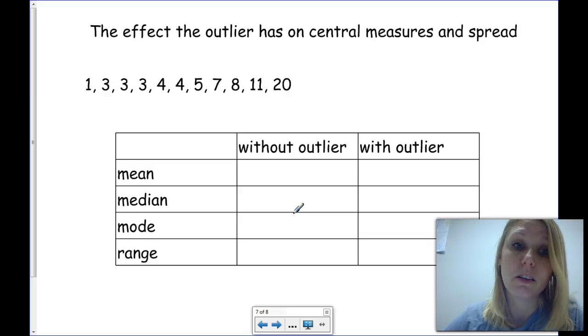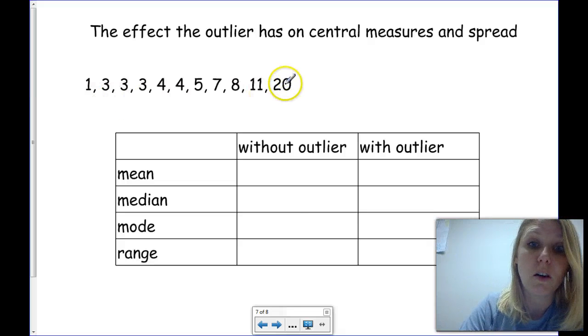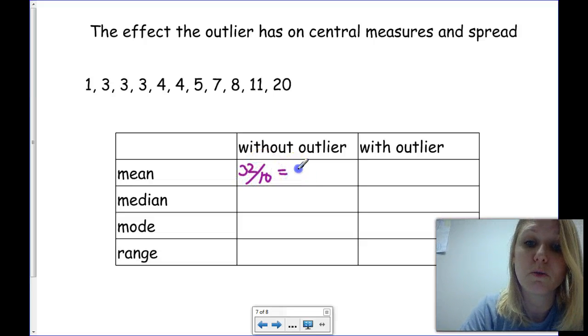First of all, the mean is when you add all the numbers together, and then divide by the number of numbers, and in this case, without the outlier, we have 32 divided by 10 data points, which equals 3.2.